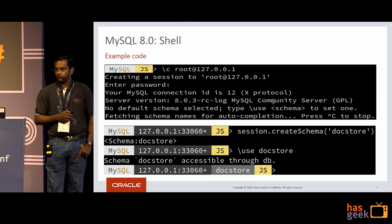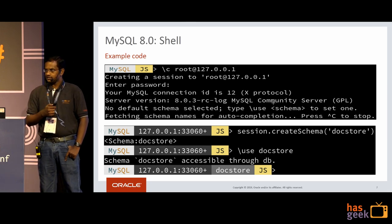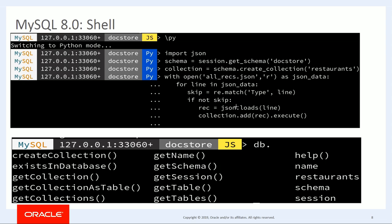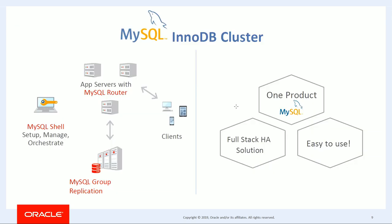This is a snapshot — you could see how easy it is to connect to an instance. The second slide shows how we create a schema: I create a schema and use it. This also shows how easy it is to switch from JavaScript mode to Python mode using backslash py. Next is the autocompletion feature, and this is what we have for InnoDB cluster — the application connects to a router, which is a lightweight process between the application server and the database. MySQL shell manages all the instances. It's one product with a full HA solution and is pretty easy to use.